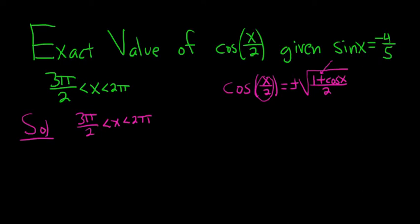Then we have to manipulate this to get x over 2. To do that we can divide everything by 2 or multiply by 1 half. Multiplying this one by 1 half gives us 3 pi over 4. Multiplying x by 1 half gives us x over 2. And multiplying this one by 1 half gives us just pi.